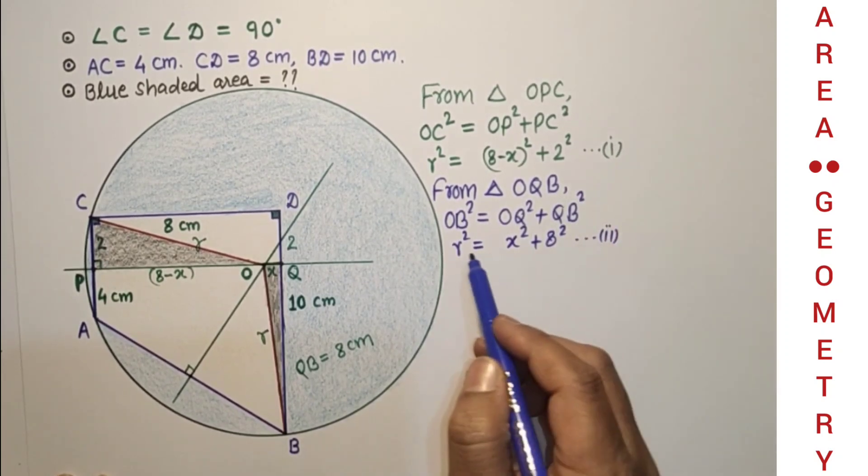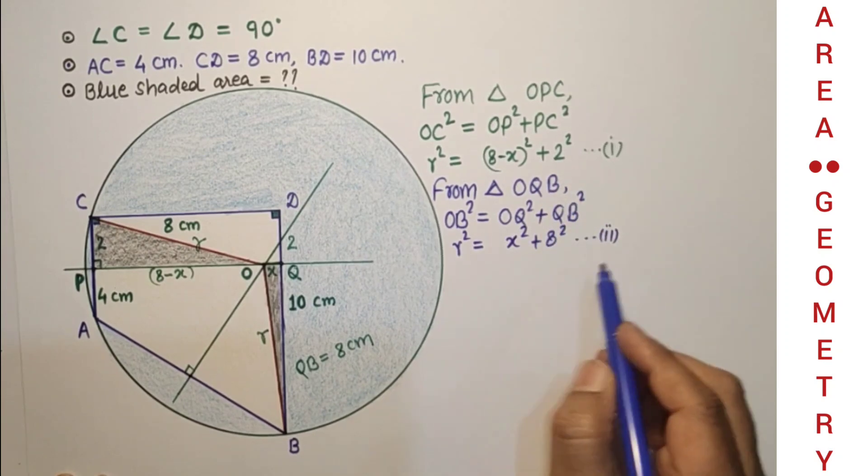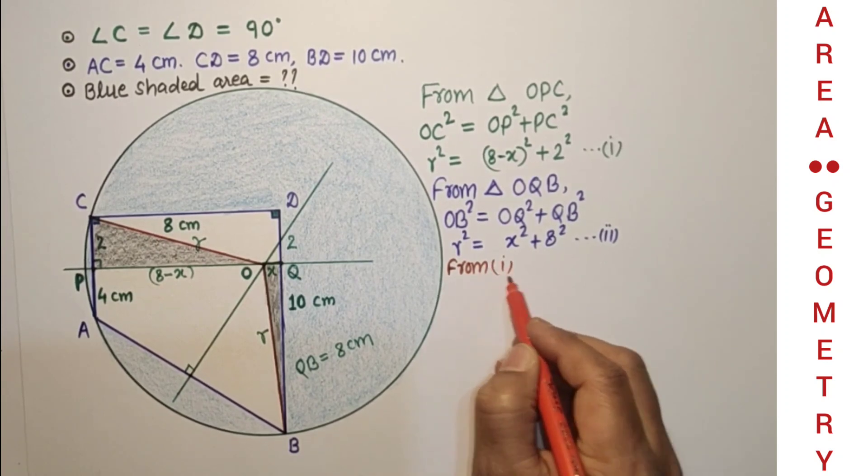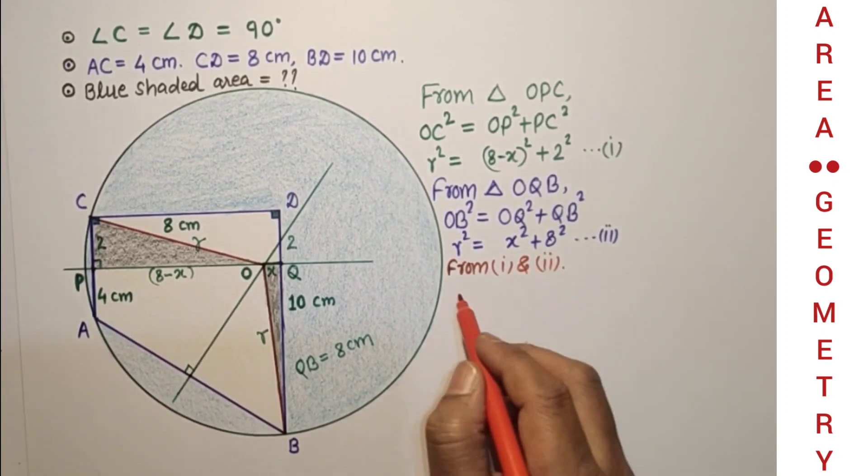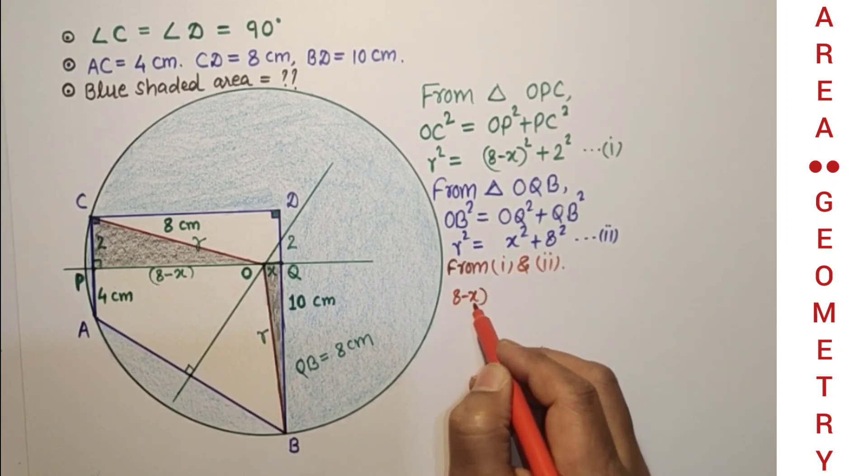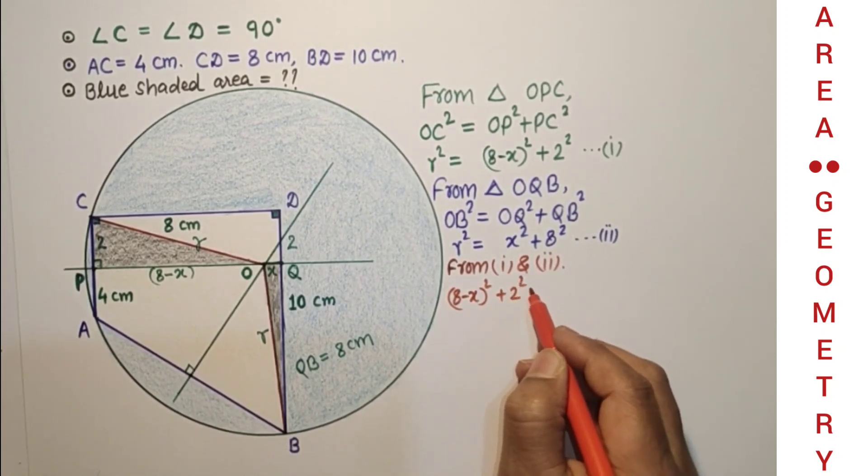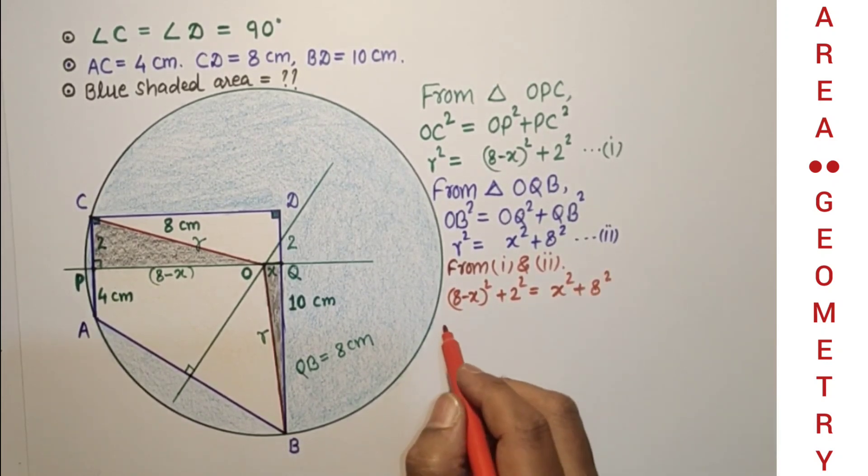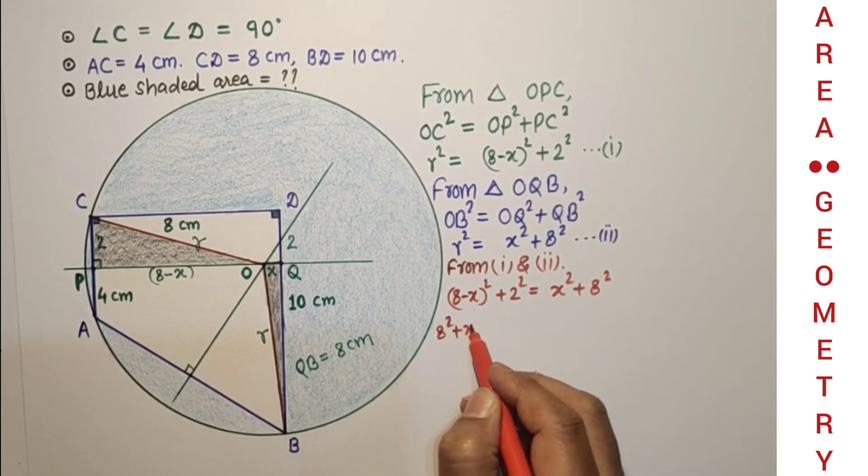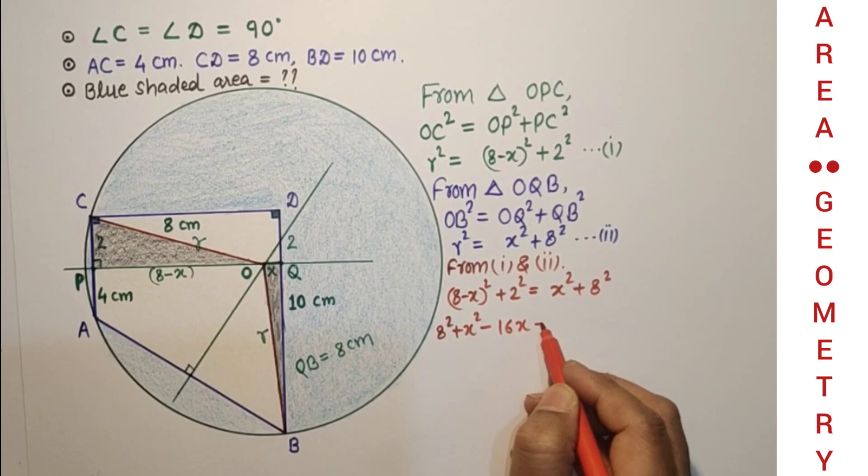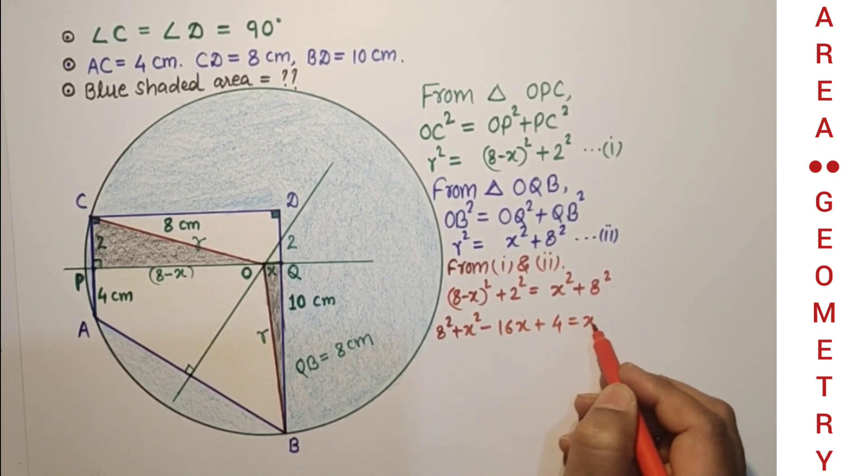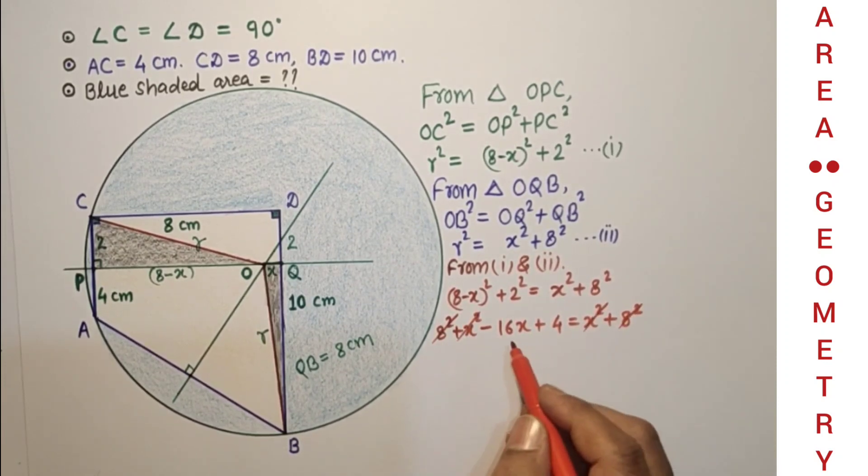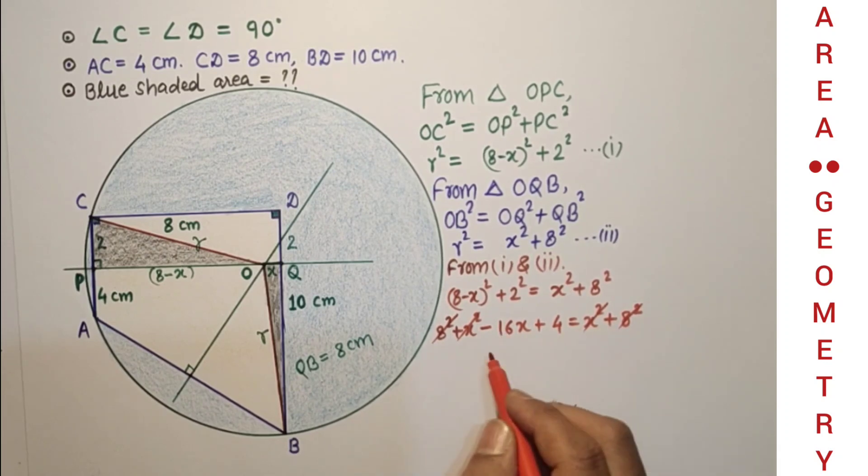From first and second, both are equal to R², so these two will be equal. So therefore from first and second results, (8-X)² + 2² = X² + 8². Therefore 8² + X² - 16X + 4 = X² + 8². These two from both sides will get cancelled. 16X is equal to 4, so X is 1/4.